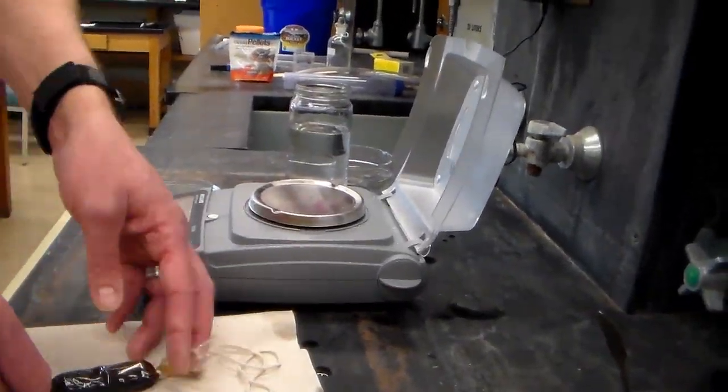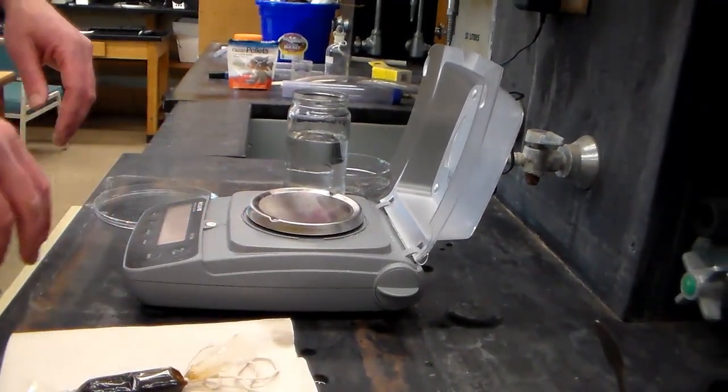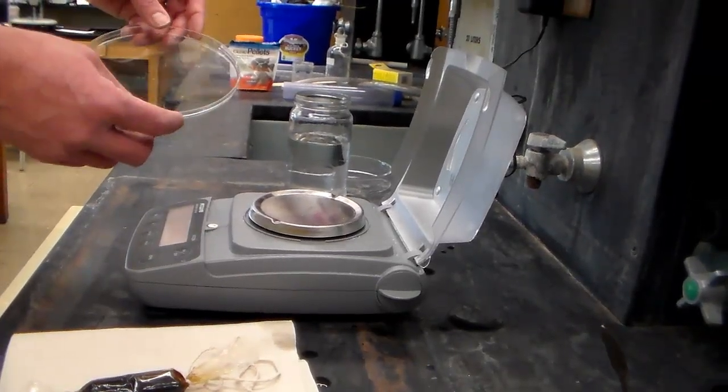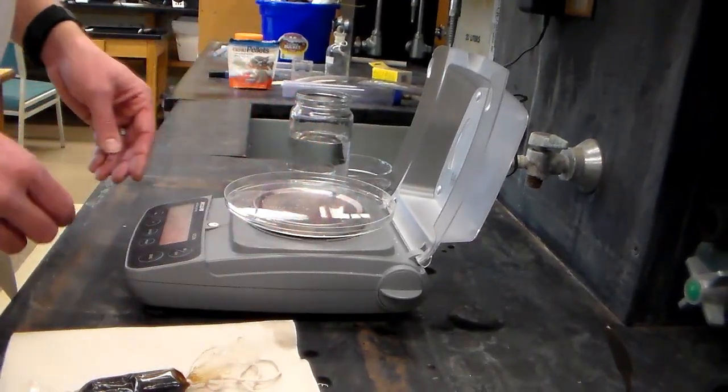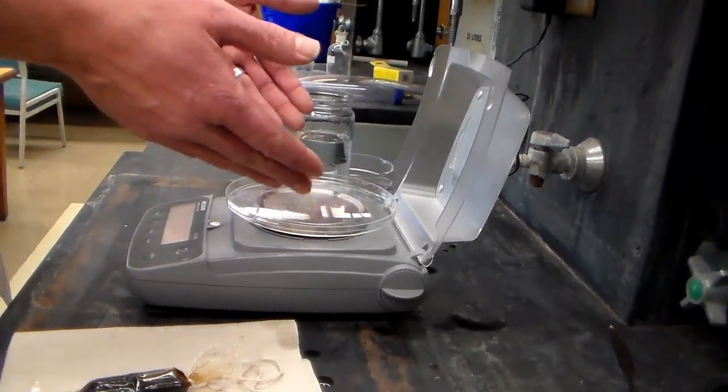Okay, now that we have sealed both ends of our dialysis tube we need to weigh it. Of course, turn the balance on. We want to have some kind of a tray to set the dialysis tubing in. This is a top of a petri dish. So we'll set that on there, but of course we don't want to include the weight of the tray.